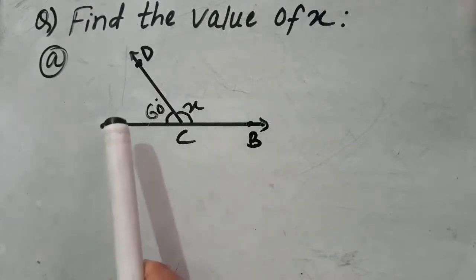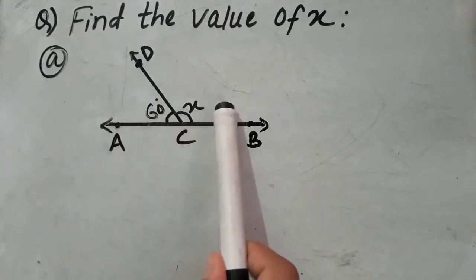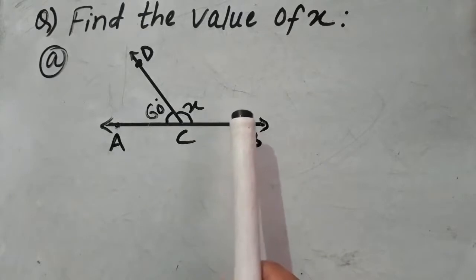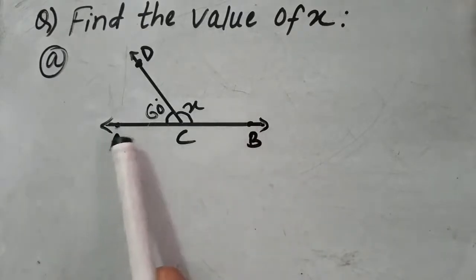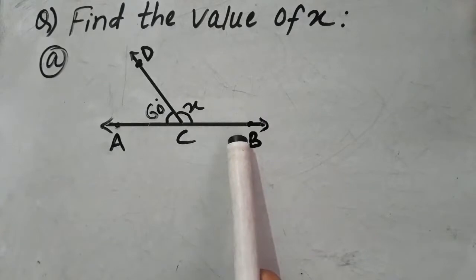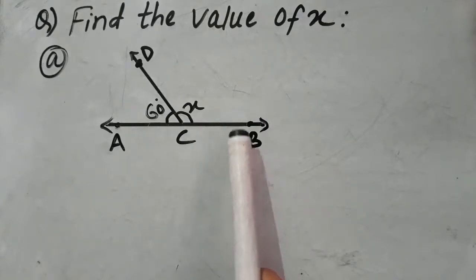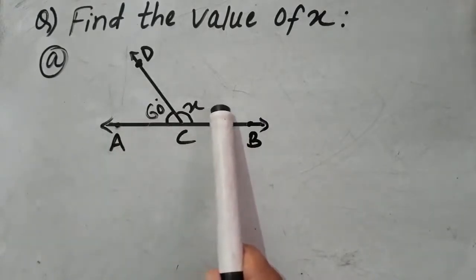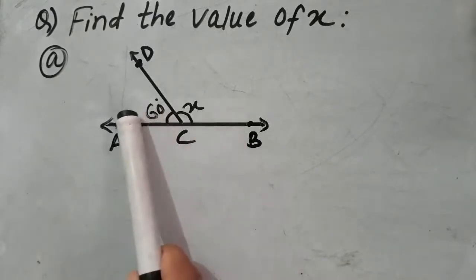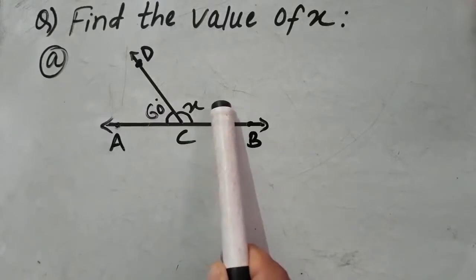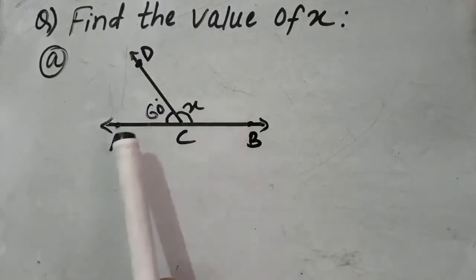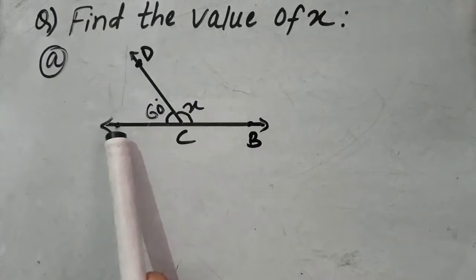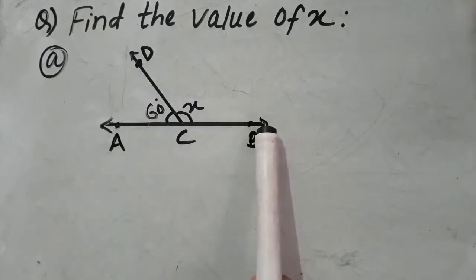Therefore, the sum of 60 and x must be 180 degrees. So angle ACB is 180 degrees. 60 plus x is equal to 180 degrees.